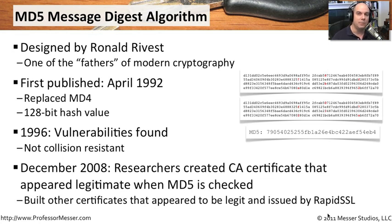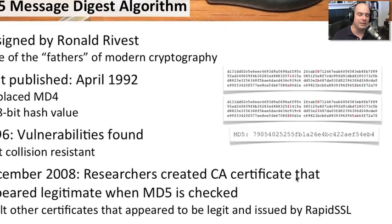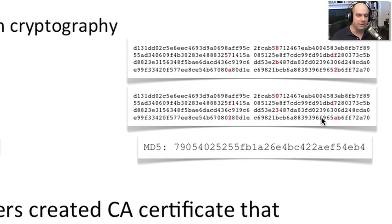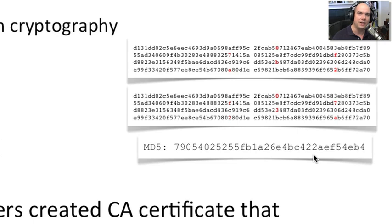That means someone could pretend to be Microsoft, eBay, or anyone. To give you a feel for what these collisions look like, these are two separate pieces of information — everything in red is text that differs between them, but everything else is exactly the same. And unfortunately, MD5 comes up with exactly the same hash. That's our collision right there, and that's what we're trying to avoid.